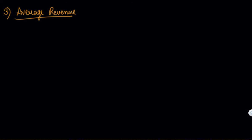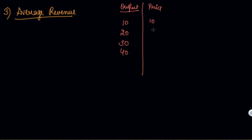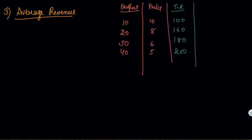The third concept is average revenue. Revenue per unit of output is your average revenue. Using the same example with output 10, 20, 30, 40; price 10, 8, 6, 5; and total revenue 100, 160, 180, 200 — your average revenue is TR divided by Q. For the first row, 100 by 10 gives you 10.